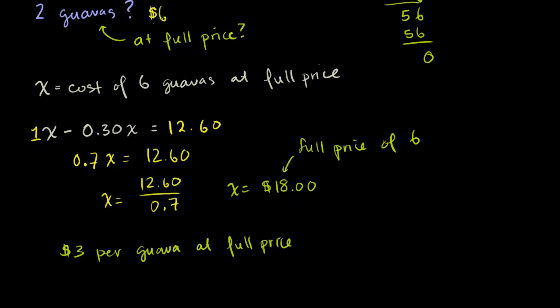Another way you could have done it, you could have just said, hey, six at full price are going to cost me $18. Two is one third of six. So one third of $18 is $6.